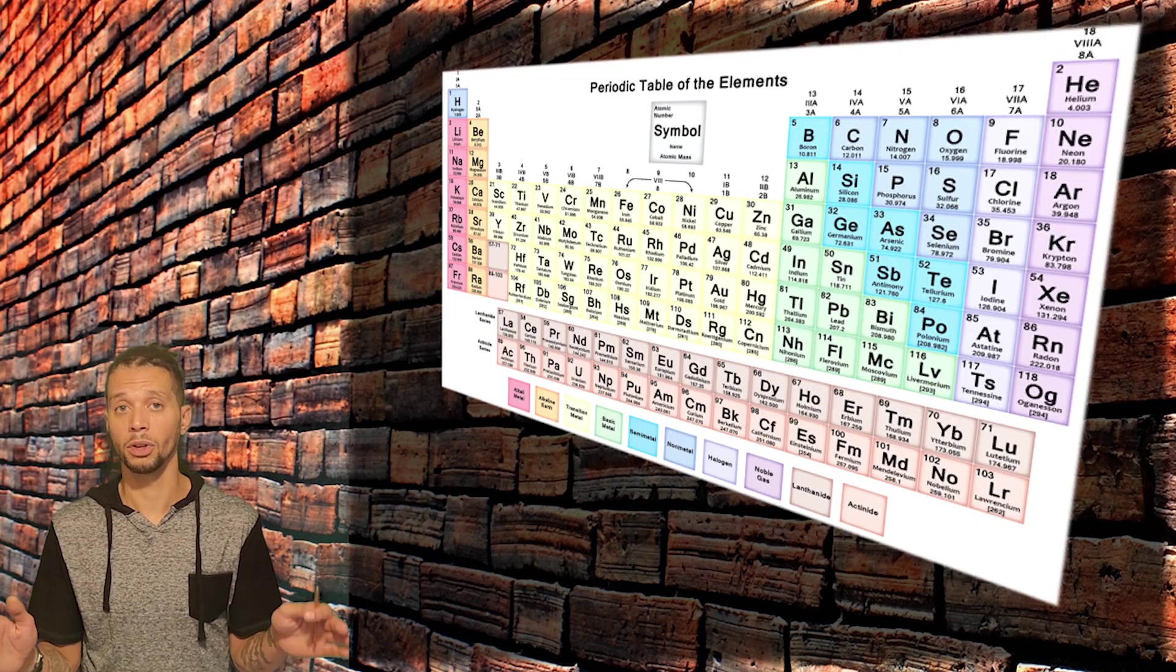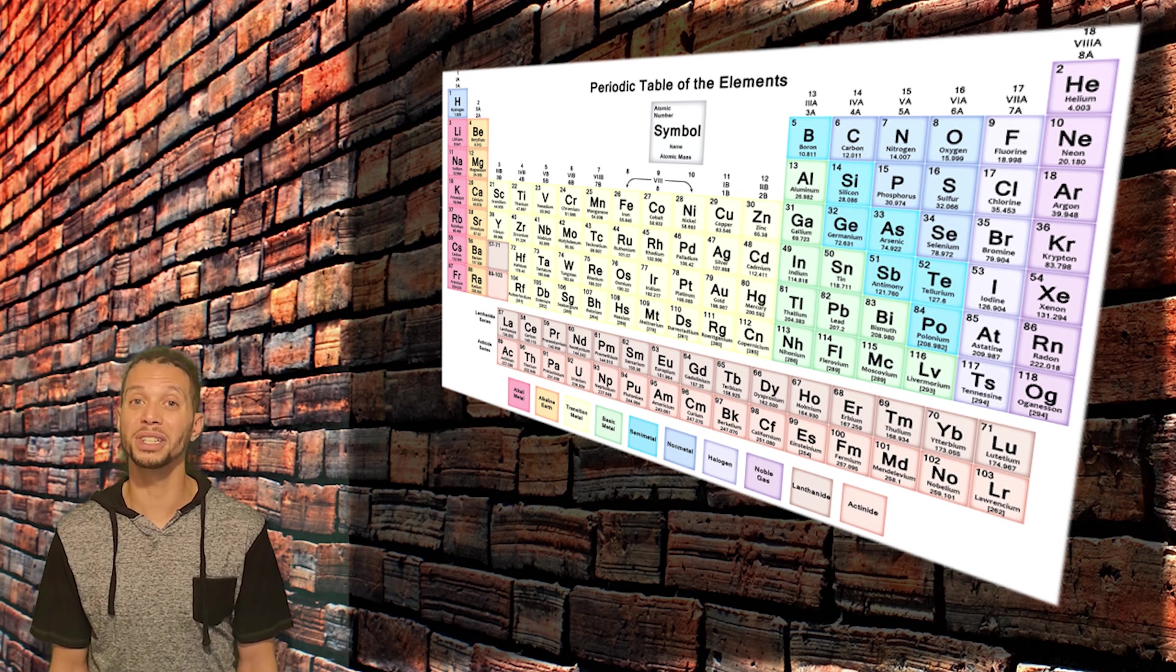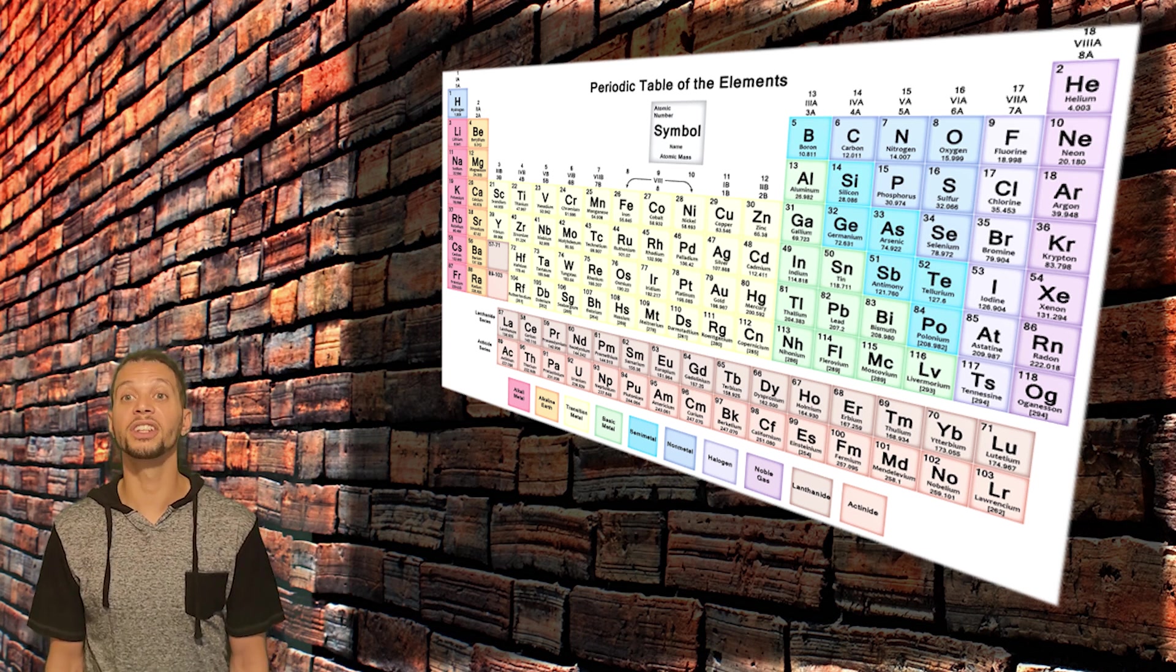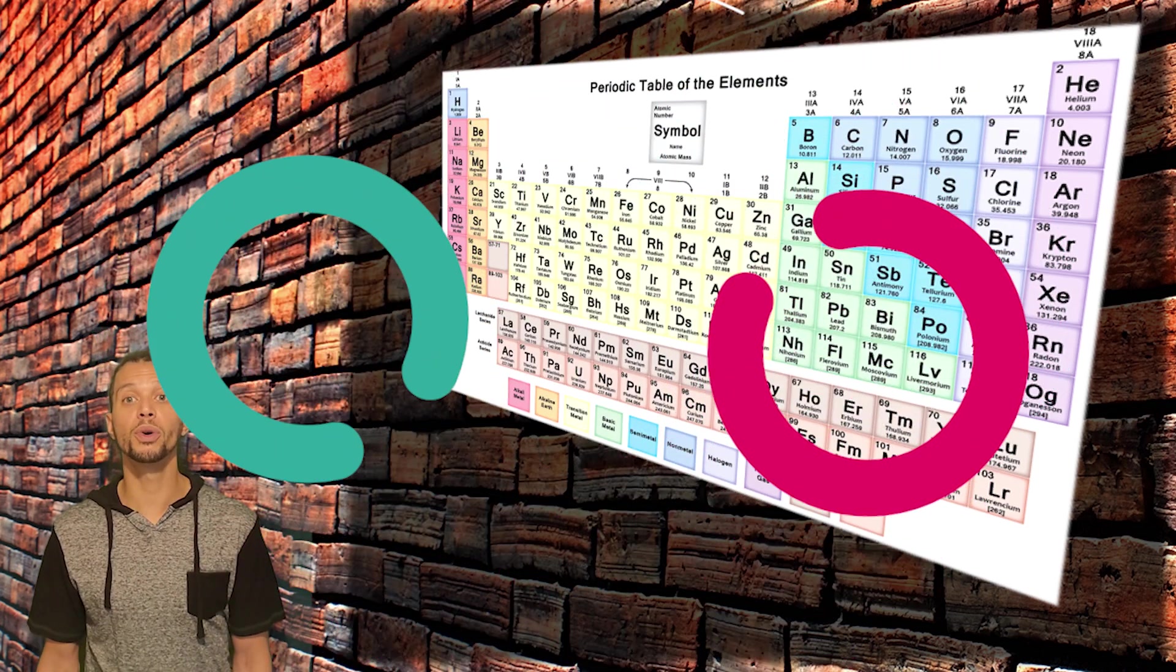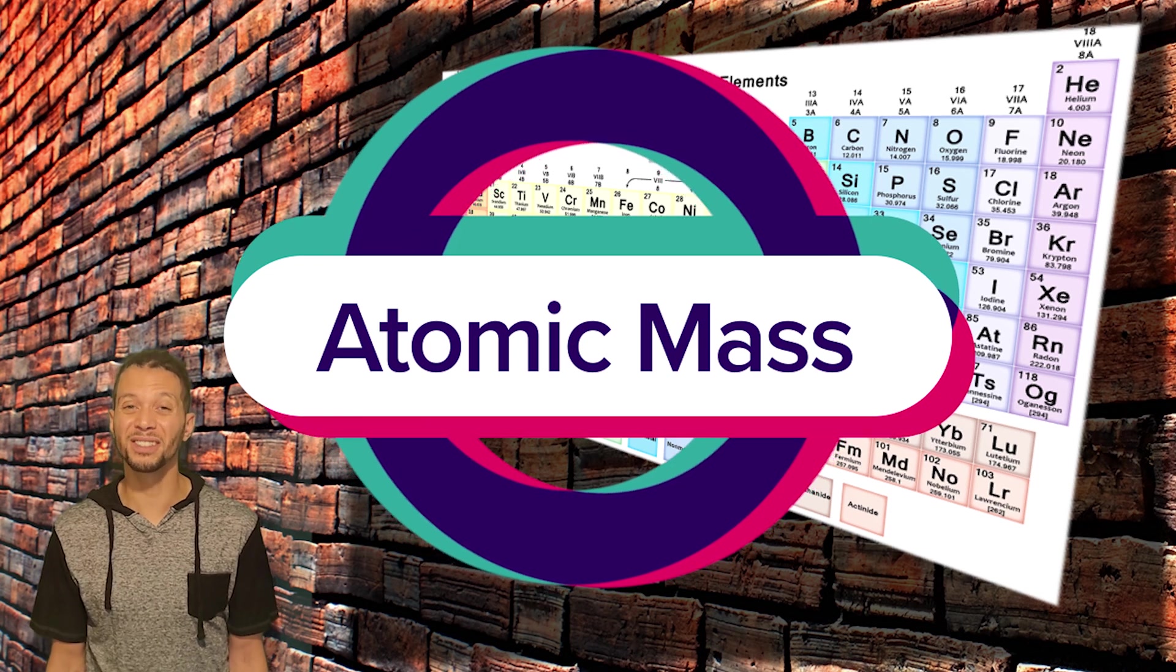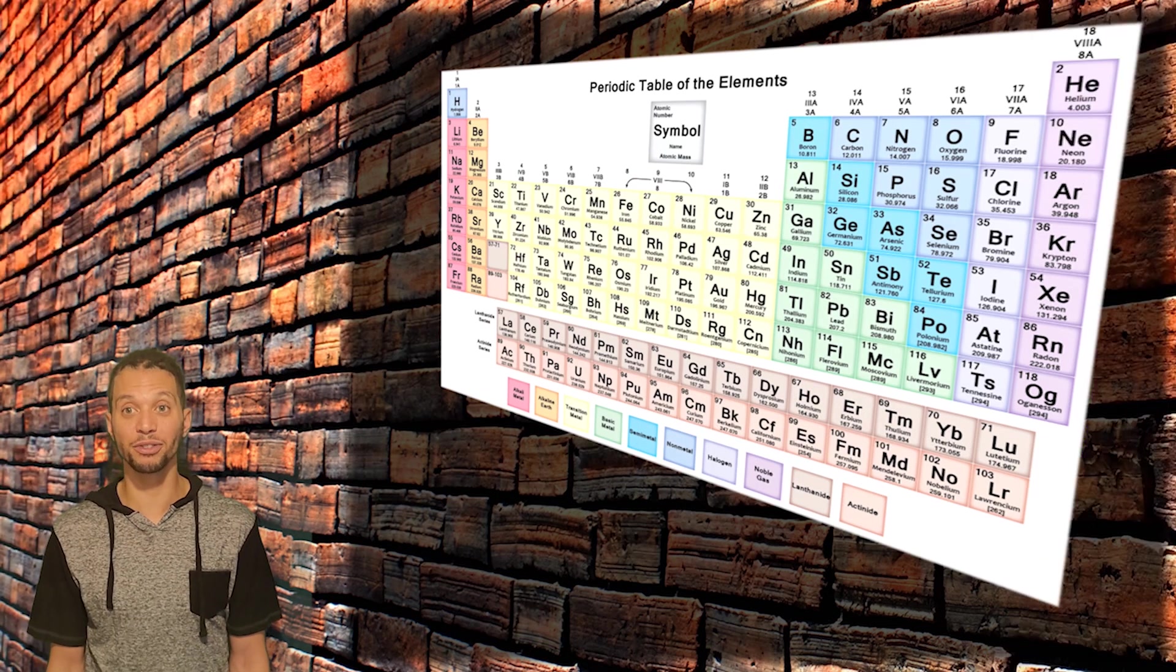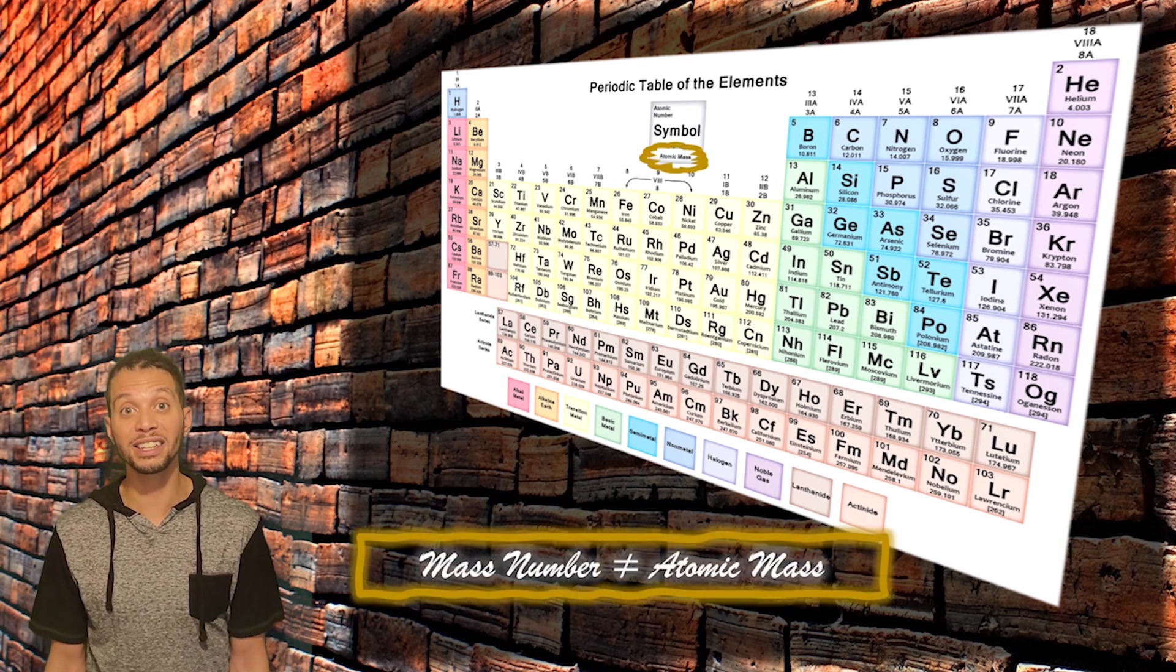But wait a second. If we go back and look at the number underneath the chemical symbol and name on the periodic table, we see that that number is a decimal. That is because the decimal number in the boxes of all the elements on the periodic table belongs to what is known as the atomic mass of an element, and more specifically the average atomic mass of an element. And we all know that when you calculate an average of something, you are doing so with multiple numbers, which leads to decimals.